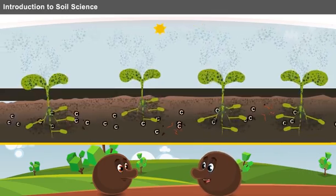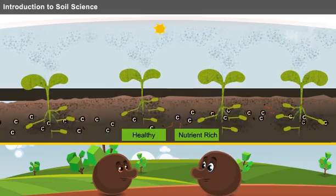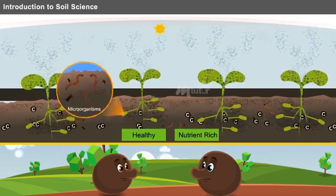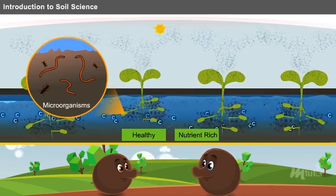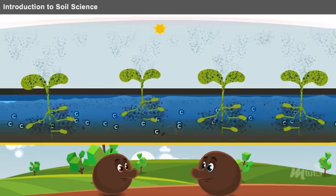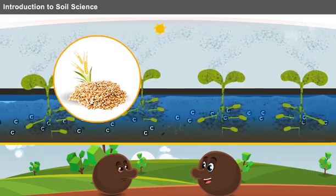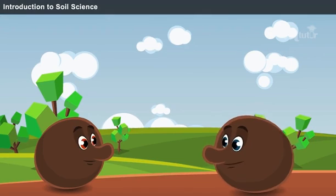More carbon in the ground makes us healthy and nutrient-rich. Look, the microorganisms are happy and help us in retaining water. When we are happy, we can help in producing more resilient crops and nutritious food. This is one of the scopes of soil science.